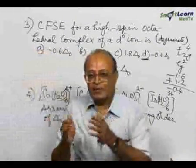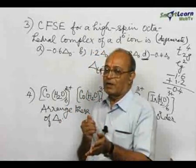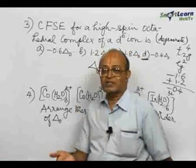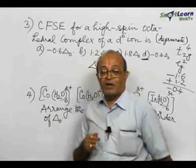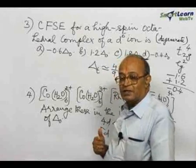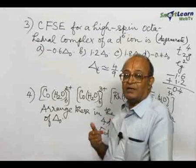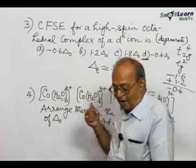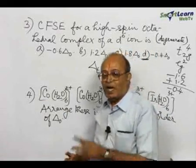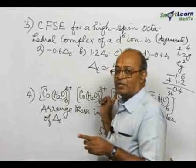So if you have a particular value of delta O for 3D, for 4D there is roughly a 40 to 50 percent increase from that of 3D. For a 5D central element, you will have a 20 to 25 percent increase in the value of delta O compared to that in 4D. Now, bearing all these points, come to question number 4: delta O — except the first one, all the 3 bear 3 positive charges.